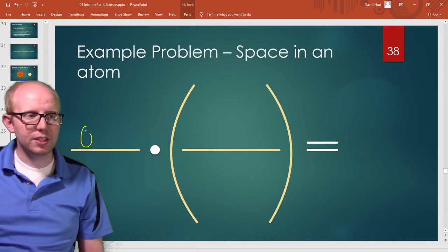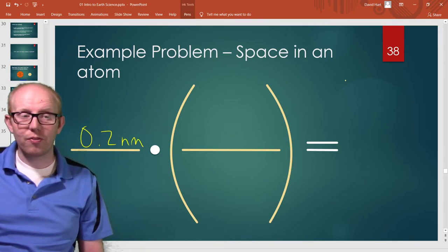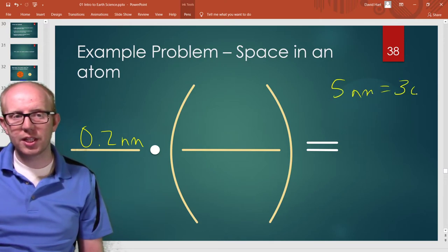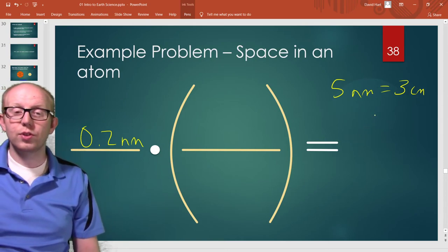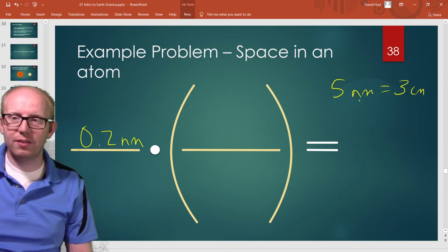So the true distance was 0.2 nanometers and we wanted five nanometers to equal three centimeters on our drawing. So what do we do? Well the thing we want to get rid of is nanometers so we're going to put that on the bottom.